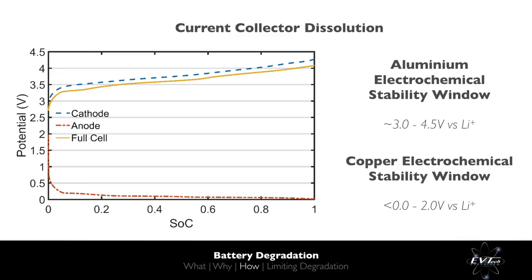Our anode current collector is made of copper, whilst our cathode is made of aluminium. These materials are selected due to their electrical conductivity, stability, and electrochemical stability window. The graph shows the anode, cathode and overall cell voltage versus state of charge, where 0 represents 0% state of charge and 1 represents 100% state of charge. At very low state of charge, the anode potential rapidly rises and the cathode potential rapidly drops. Thus, at very low state of charge, the aluminium and copper current collectors can fall outside of their electrochemical stability window. If this happens, dissolution of the current collectors will occur, resulting in copper and aluminium particles transferring to the electrolyte.